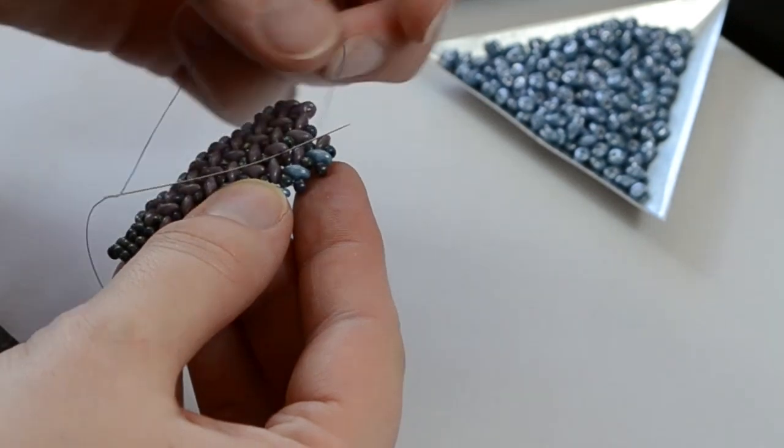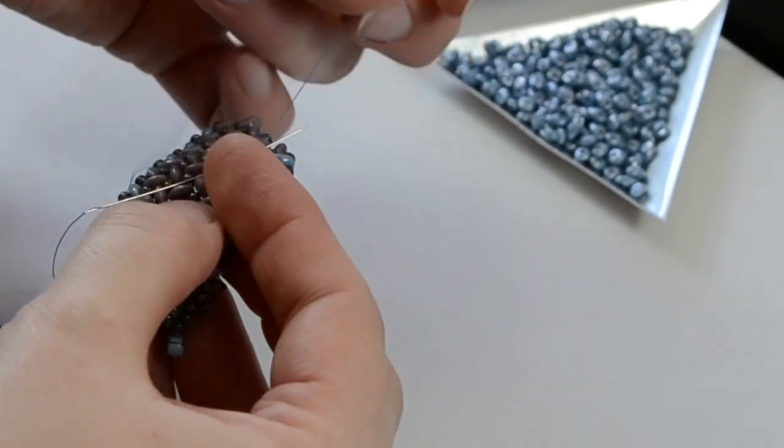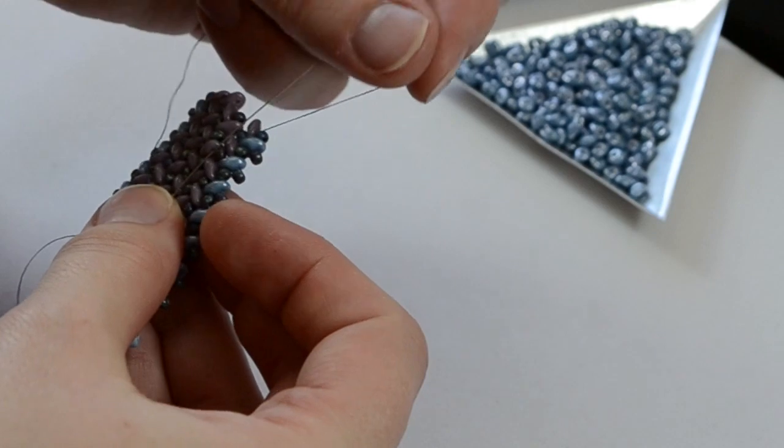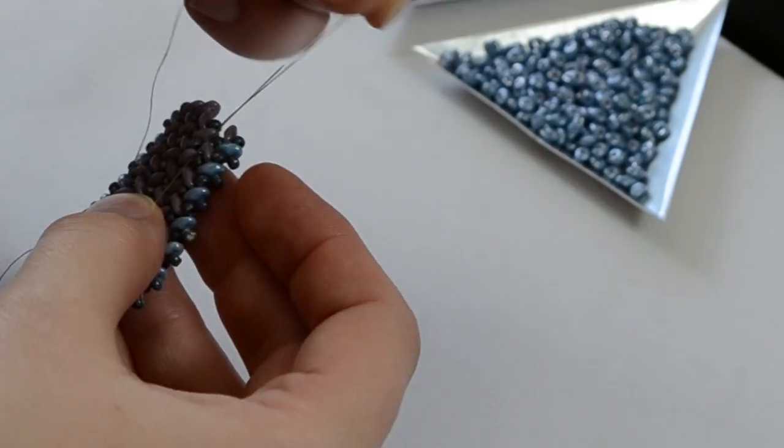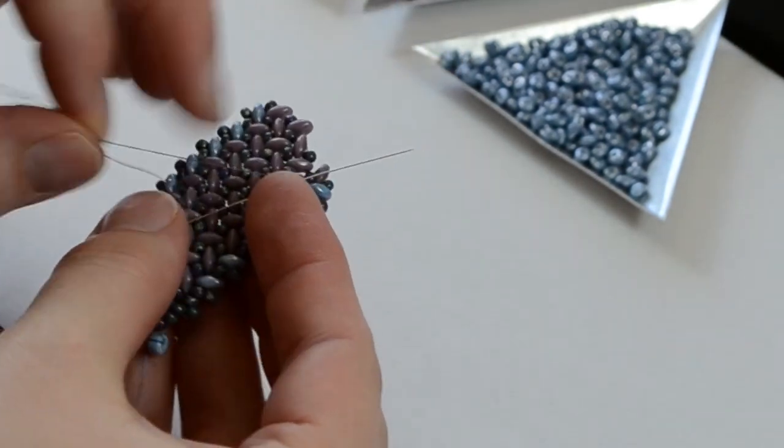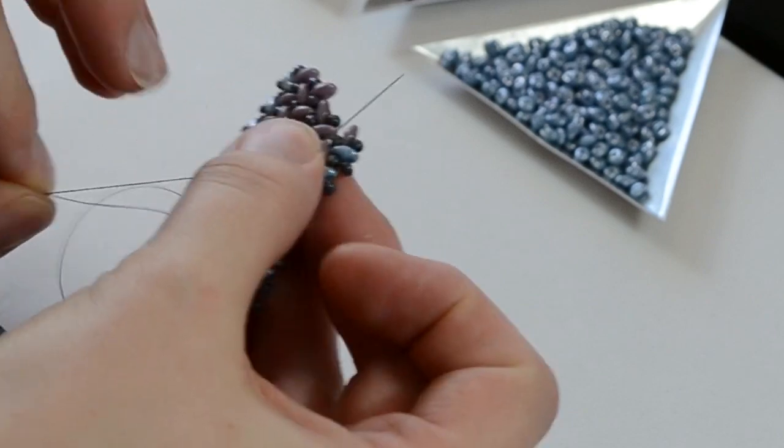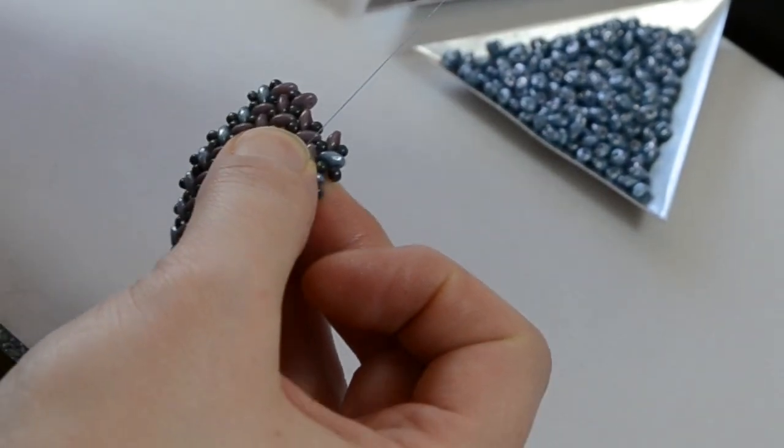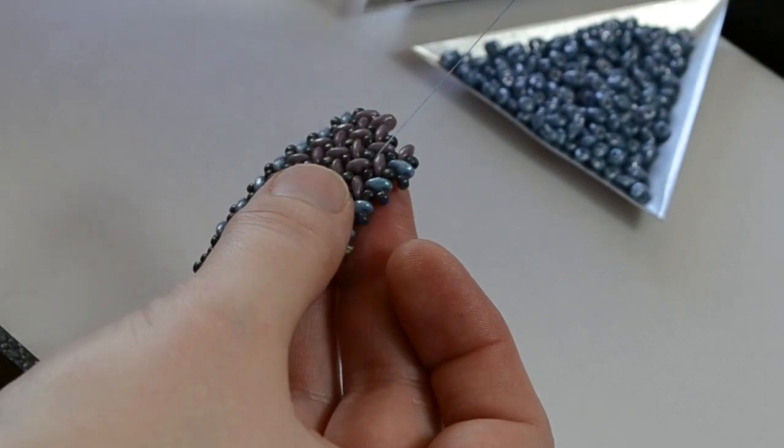Take the tail of thread and wrap it twice around the tip of the needle. Once, twice. Then pull it down snug, pinch it, and pull the needle through. This forms a little tiny knot.